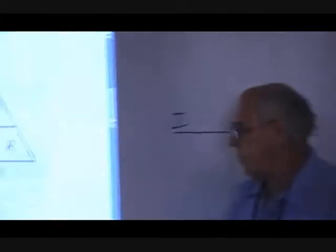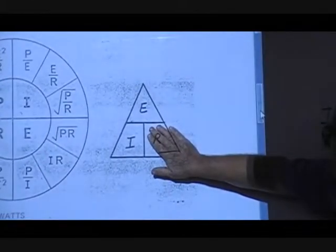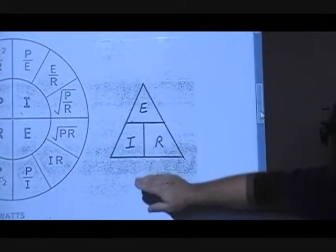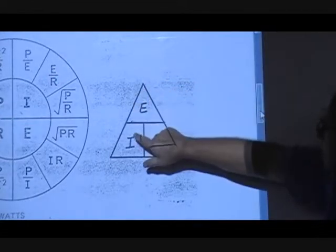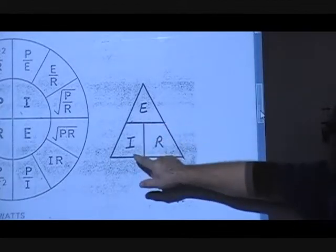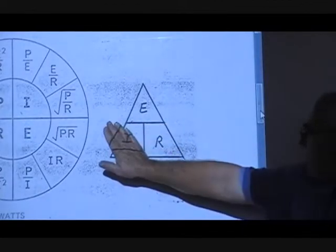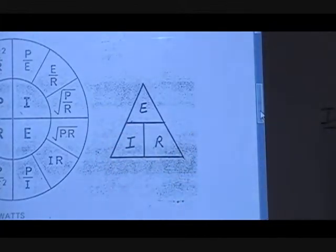If I forget exactly what the formulas are, I can simply cover up the one that I want to find, and it will tell me what to do. For example, if I want to find E, it's I times R. If I want to find R, it's E divided by I. And if I want to find I, it's E divided by R.